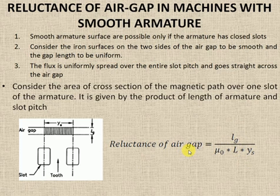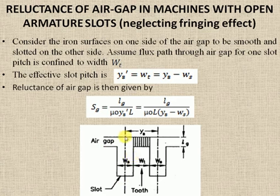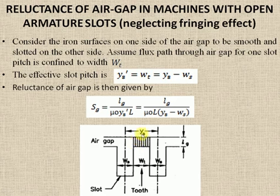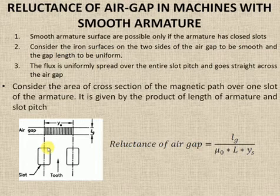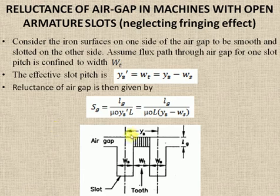Having understood the reluctance of air gap with smooth armature, we now move to find the reluctance of air gap with open slots. Here, slotting is provided only on one side — only the rotor side is slotted while the stator side remains smooth. The flux will flow only through the tooth portion in the air gap; the flux path is confined to the width of the tooth. Unlike the previous case where flux was uniformly distributed over the slot pitch, here it is not uniform.